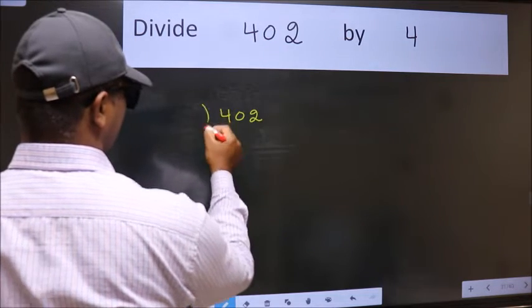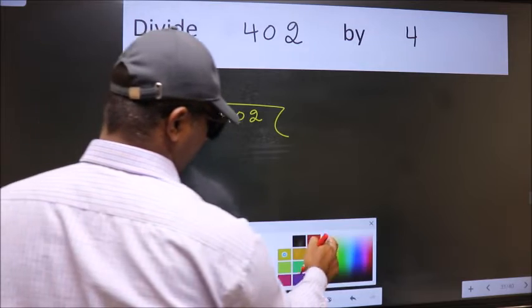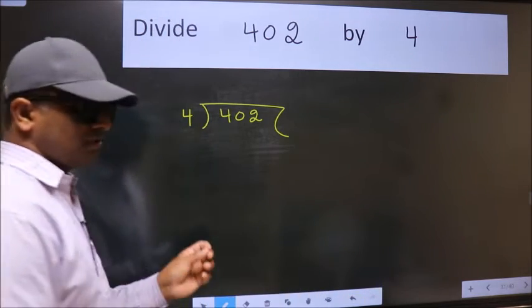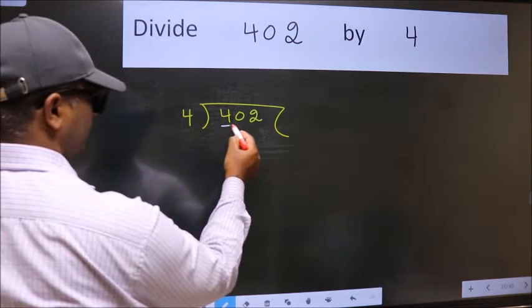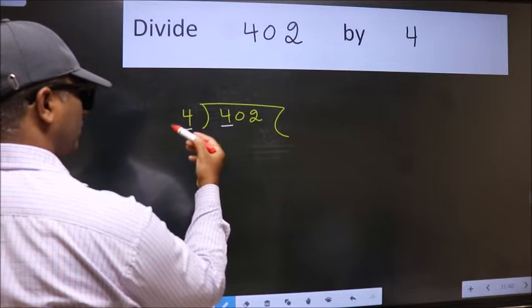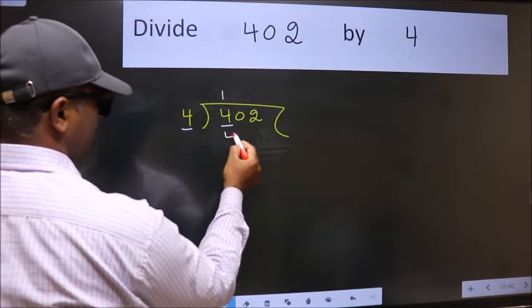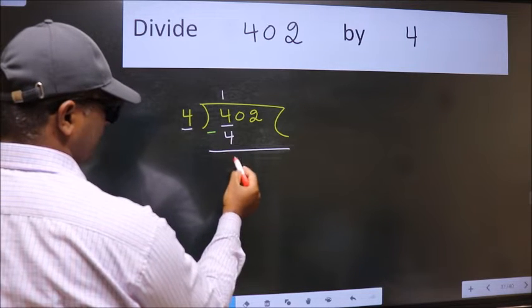402 here, 4 here. This is your step 1. Next, here we have 4 and here 4. When do we get 4 in 4 table? 4 once 4. Now we should subtract. We get 0.